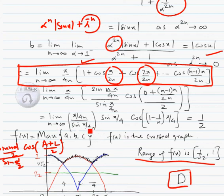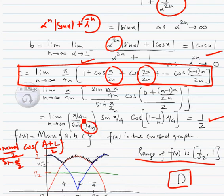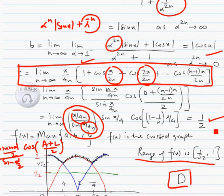Now using the sin x over x limit, we get the limiting value of one half. You can see sin(π by 4n) — this angle approaches 0. We make the same angle in the numerator, so this ratio approaches 1, and we get the answer 1 by 2.